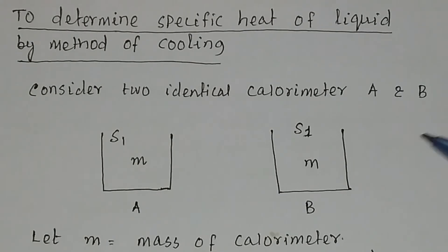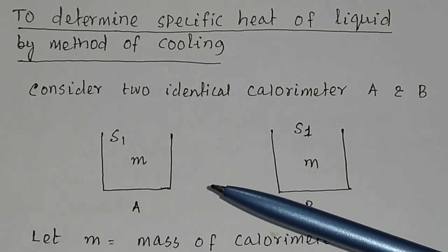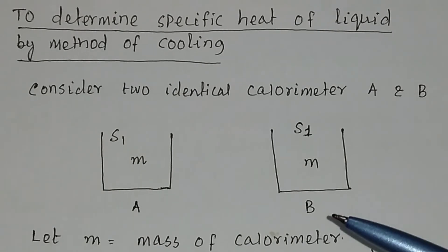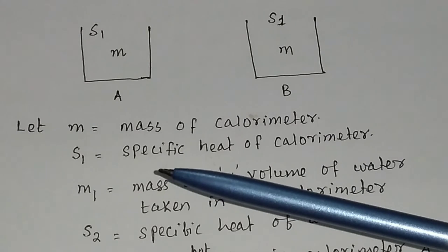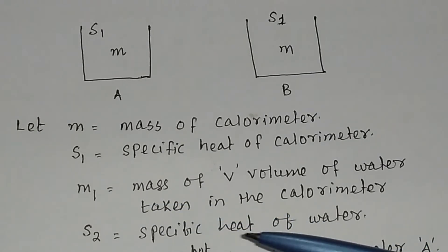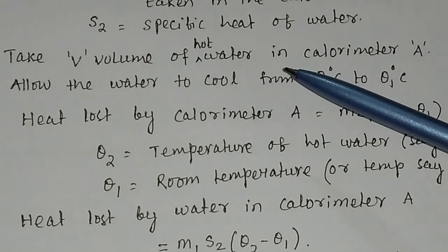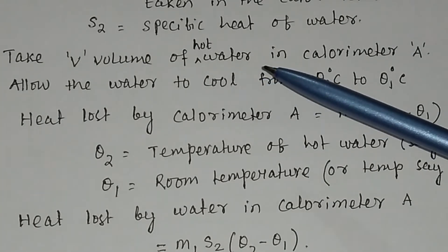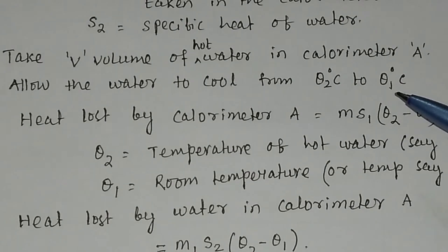To determine the specific heat of any liquid by method of cooling, you use either two calorimeters of equal mass, or one calorimeter — first with water, then with the liquid (here, kerosene). Suppose the mass of the calorimeter is M, its specific heat is S1, the mass of volume V of water is M1, and S2 is the specific heat of water. We heat V volume of water up to 70 degrees centigrade.